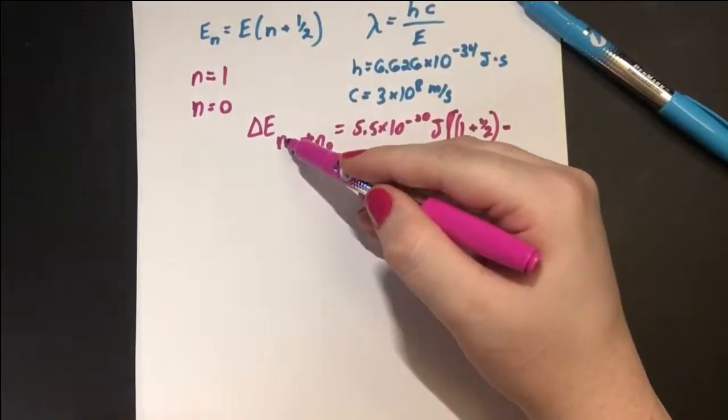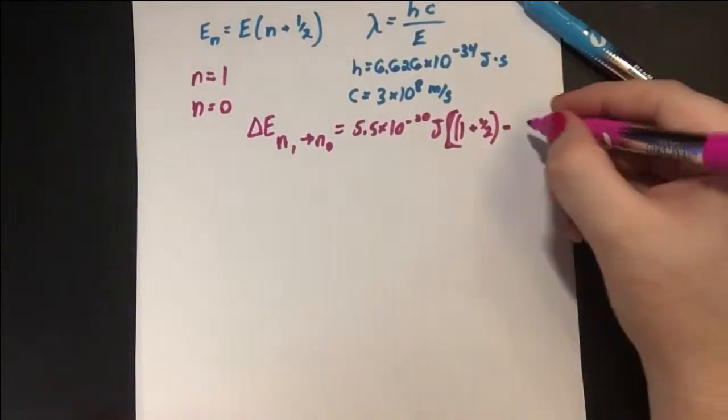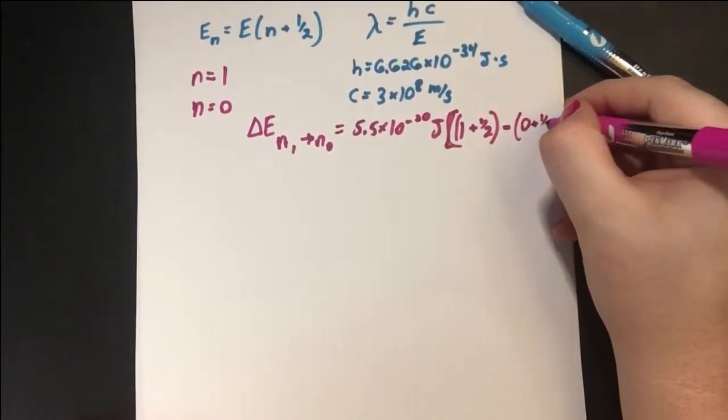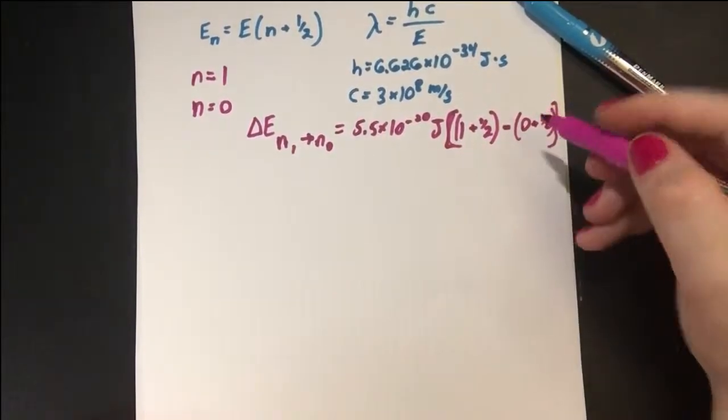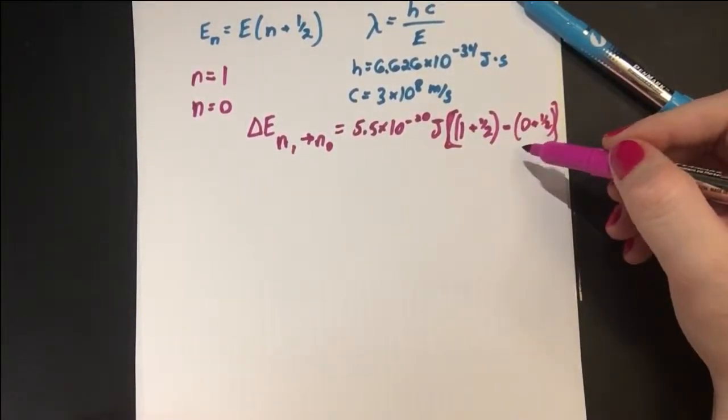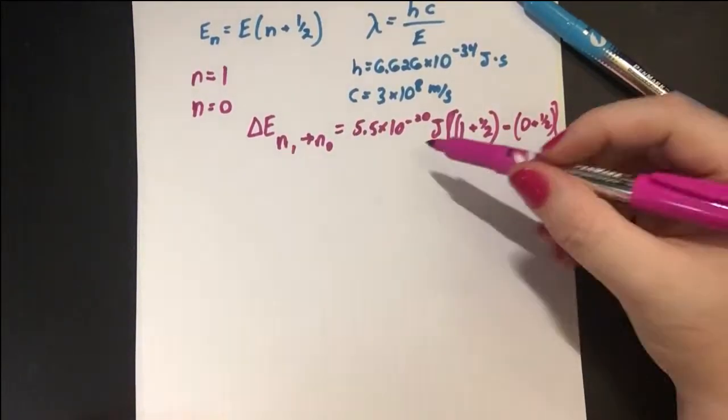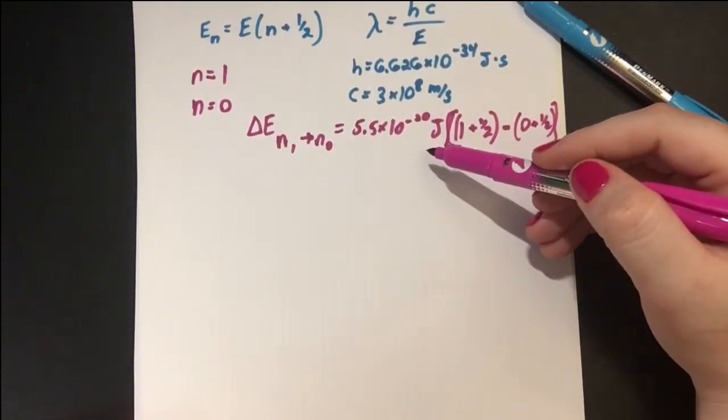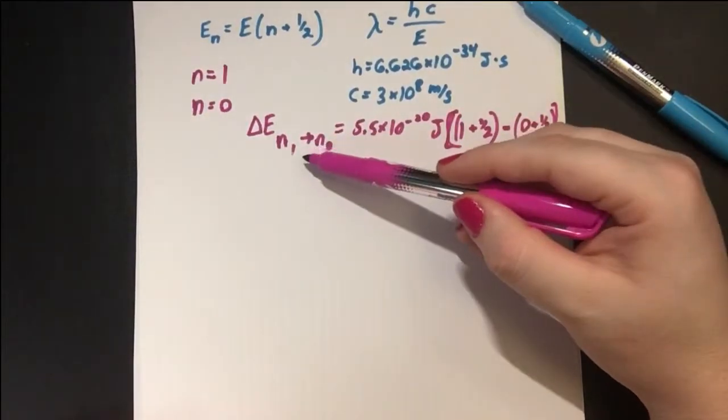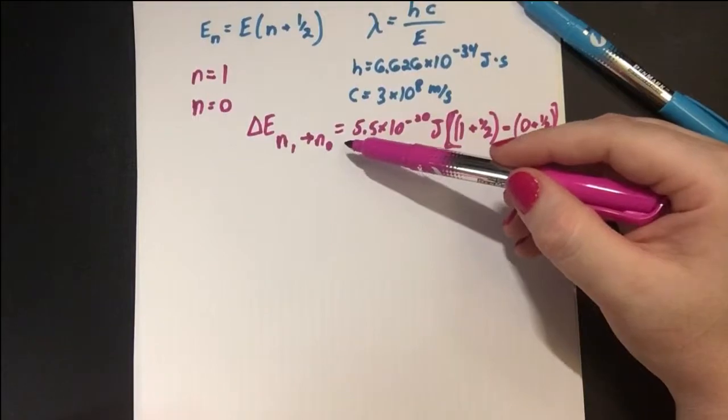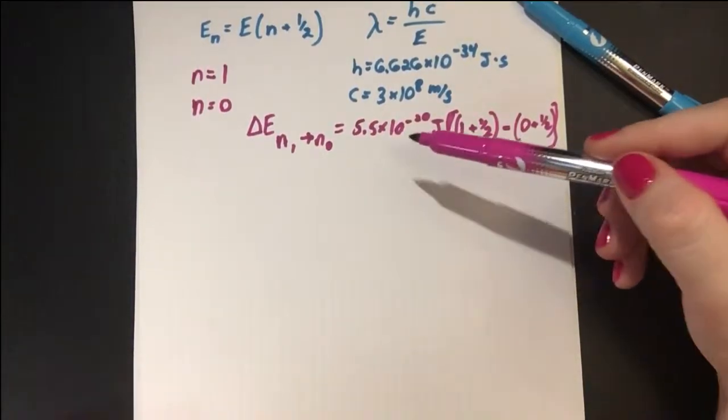Minus, because we're doing the change to 0, our final state, which is going to be 0 plus 1/2. So we'll see the 1/2s cancel, and all we get is 1 times 5.5 × 10⁻²⁰. So that's the amount of energy that is changed from going from the first excited state to the ground state.